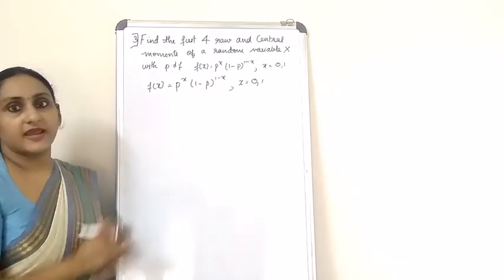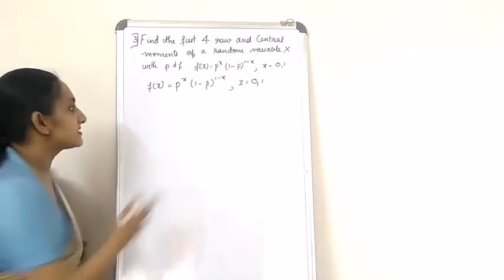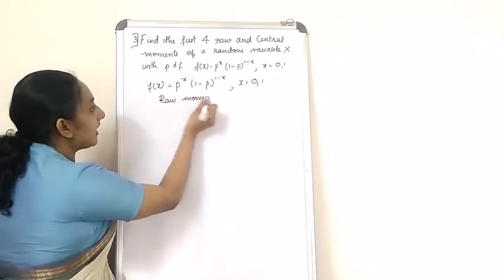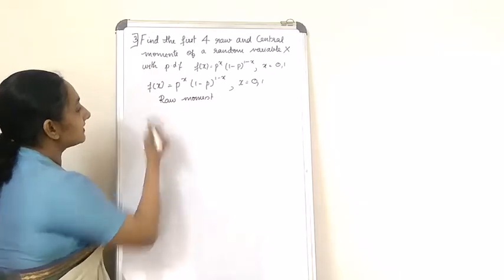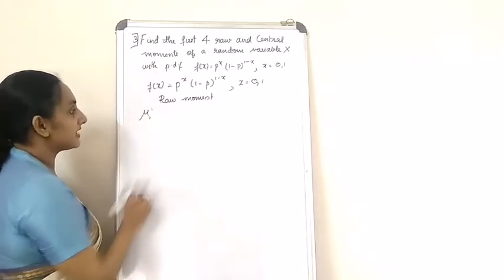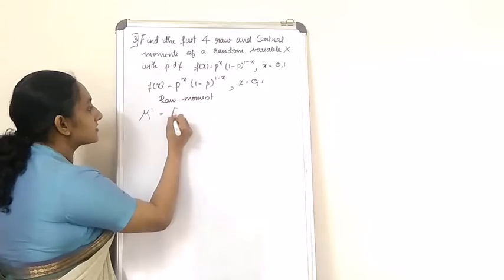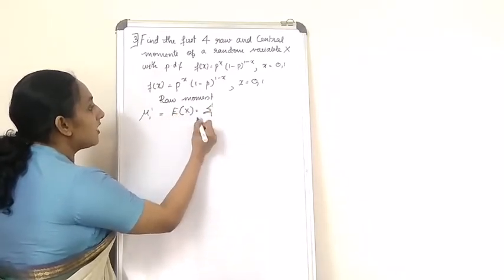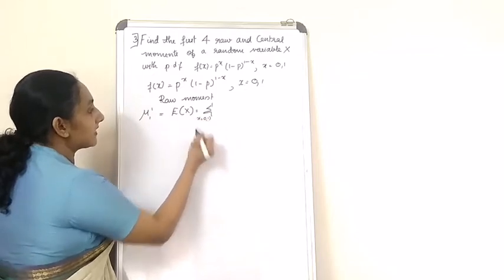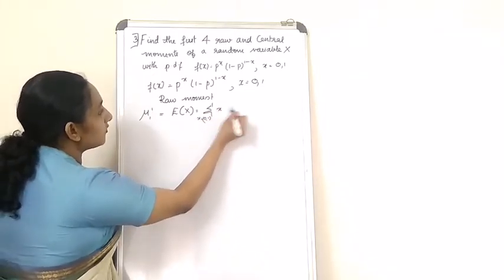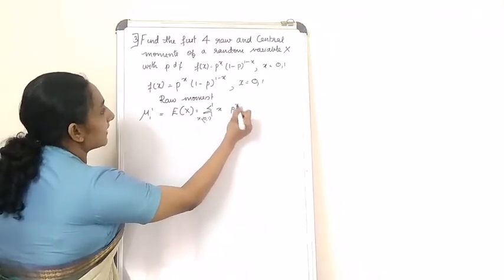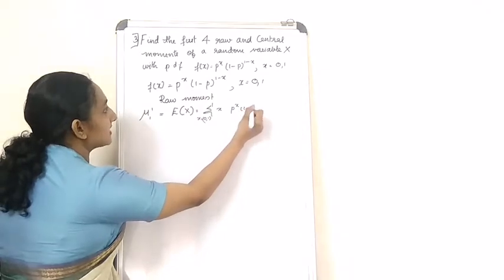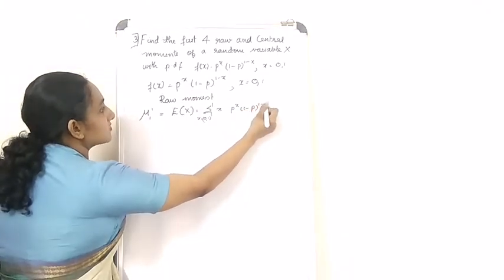Now let's take the case of raw moments. The first raw moment, μ₁', is nothing but the expectation of x. The formula for expectation of x is the summation of x into p(x), which in this case is p^x into (1-p)^(1-x).